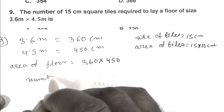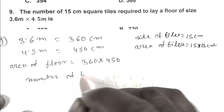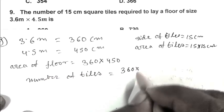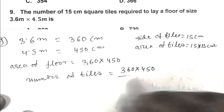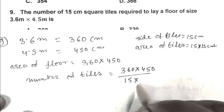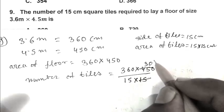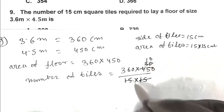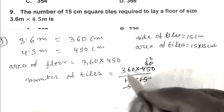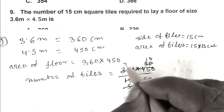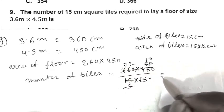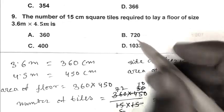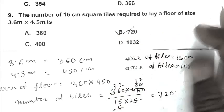Area of tiles is 15 times 15 centimeter square. Number of tiles equals 360 multiplied by 450 divided by 15 multiplied by 15. That equals 720. So B is the right answer.